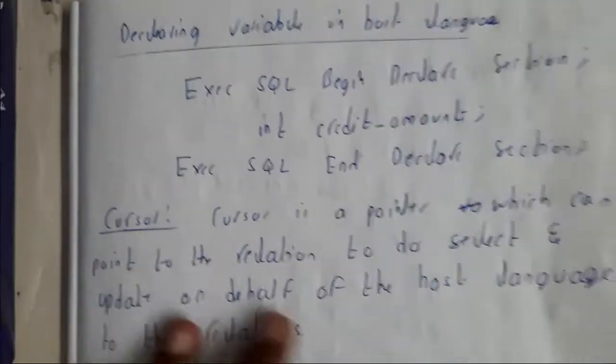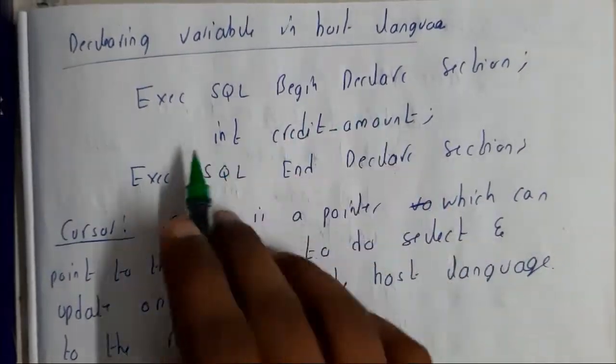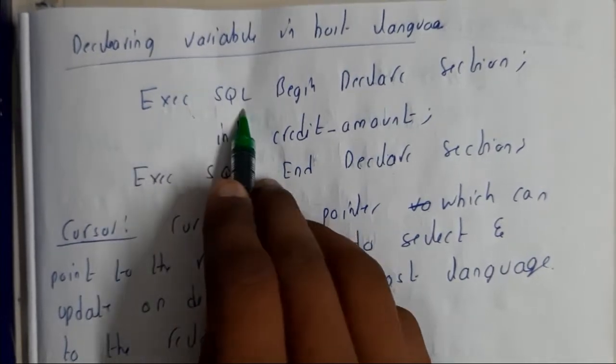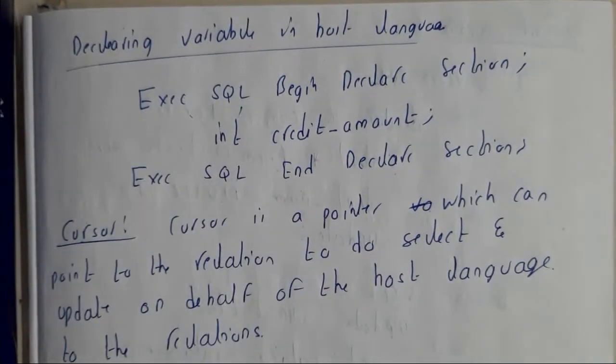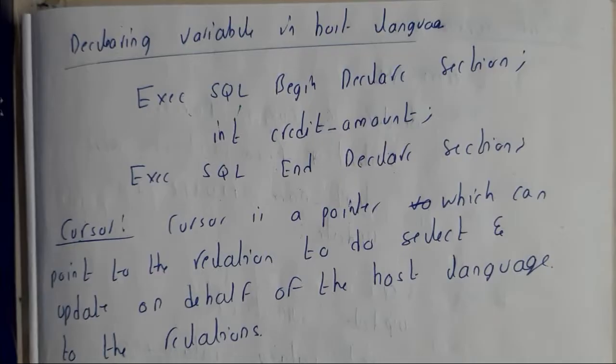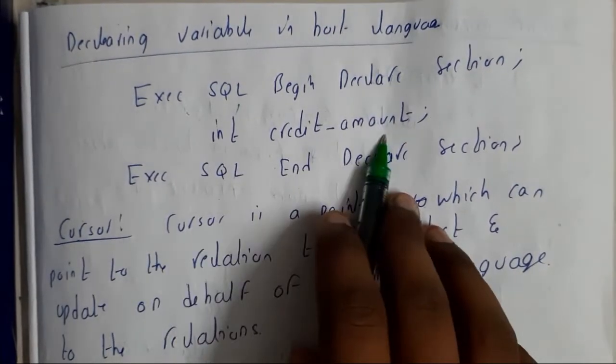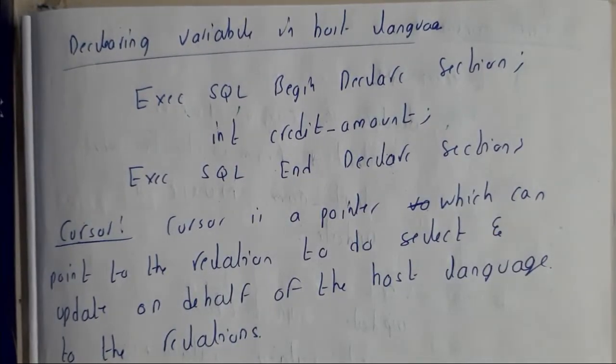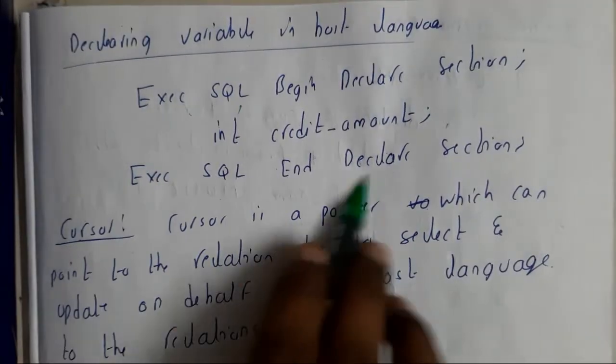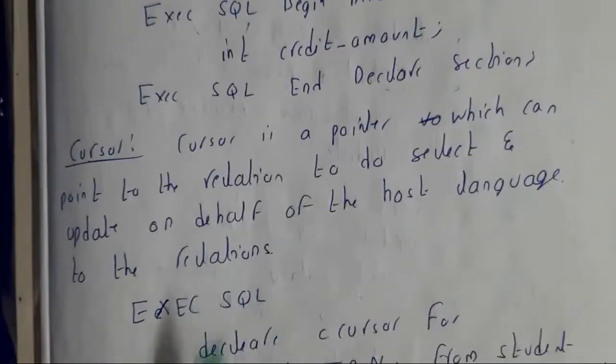In that way you will be connecting. Declaring the variables in host language will be done in this way: EXEC SQL BEGIN DECLARE SECTION int credit_amount. This will be your integer value. You will be ending the declaration section this way.